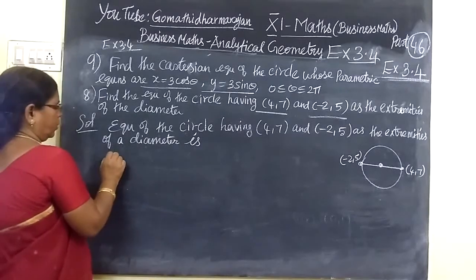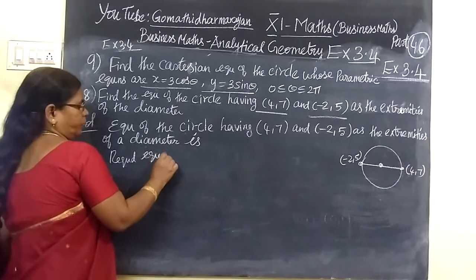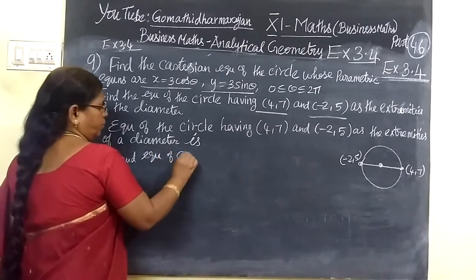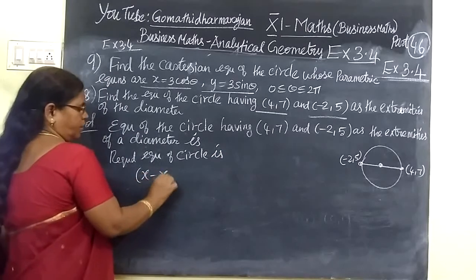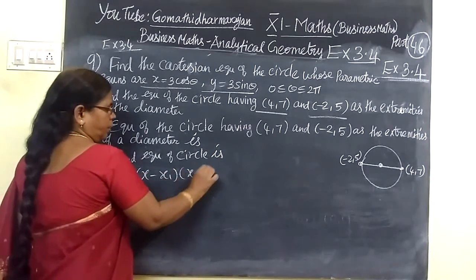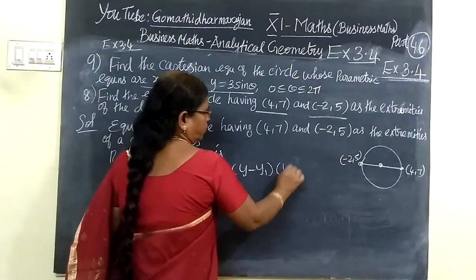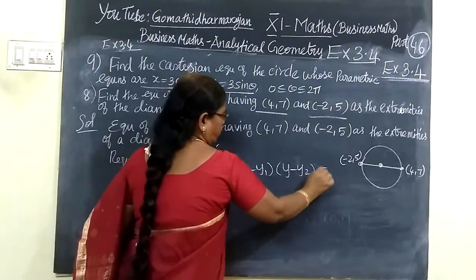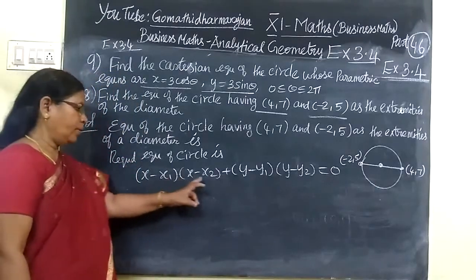It is the equation of the circle. This is the diameter formula: (x - x1)(x - x2) + (y - y1)(y - y2) = 0. Very simple formula. Here x1, x2, y1, y2.